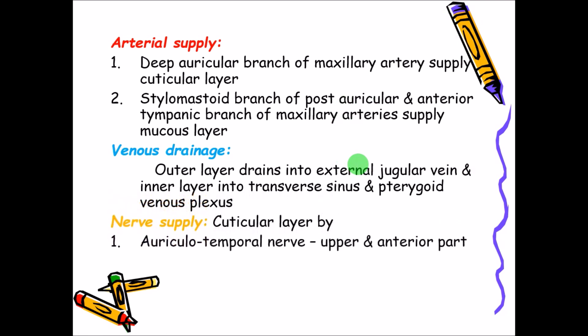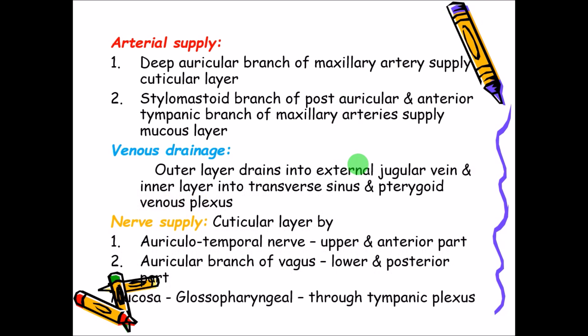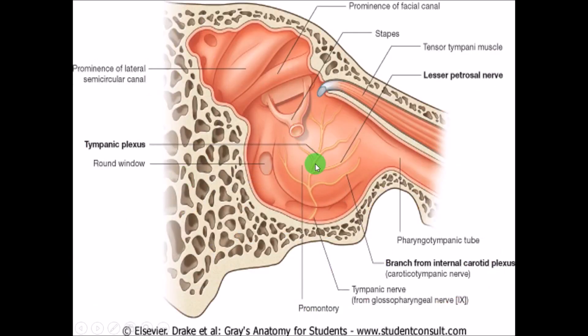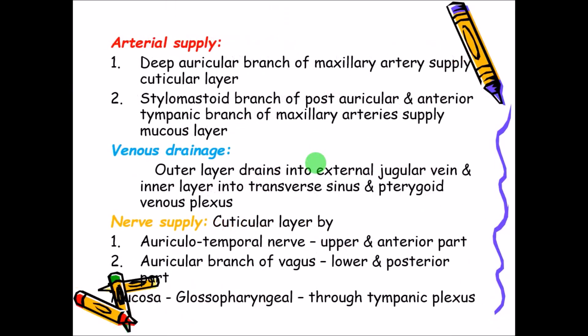For nerve supply, the cuticular layer is supplied by the auriculotemporal nerve to the upper and anterior part, and the auricular branch of the vagus nerve to the lower and posterior part. The mucosal layer is supplied by the glossopharyngeal nerve through its tympanic nerve forming the tympanic plexus.